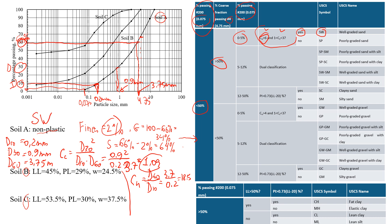Now let's do Soil B. We know it's a plastic soil. The plasticity index is the difference between the liquid limit and the plastic limit: 45 minus 29 gives us a plasticity index of 16%.